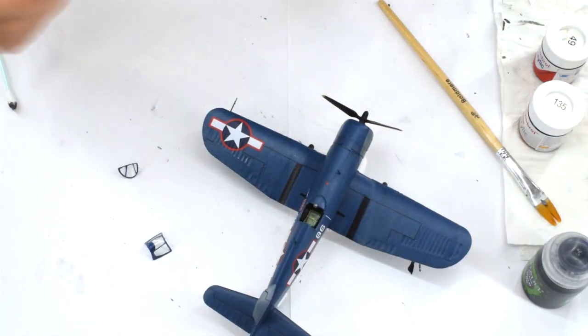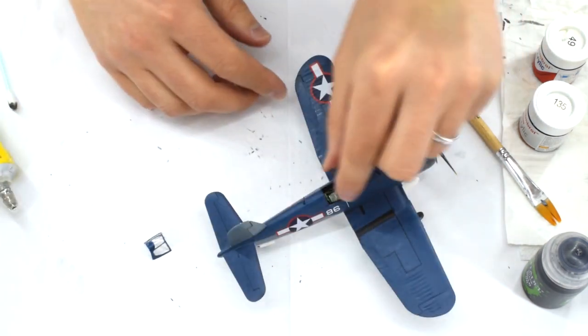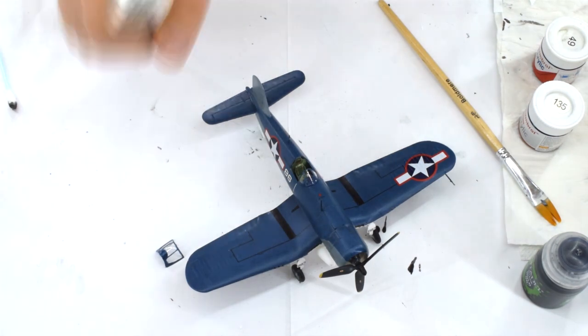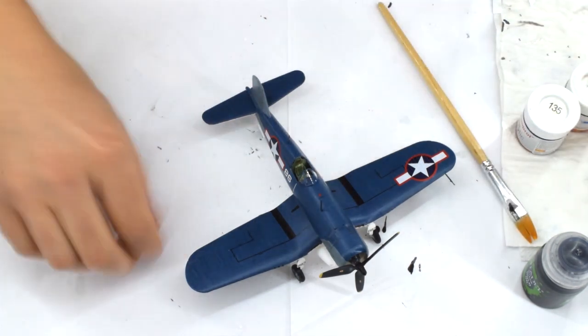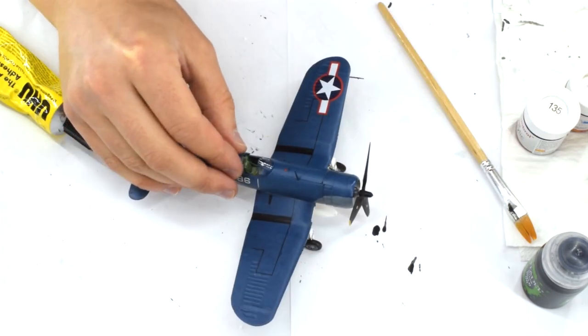A general purpose glue was used to cement the cockpit canopy in place. Poly cement has a habit of fogging up clear parts and this glue does not. It does leave strings though, so you must be careful when applying it. I positioned the canopy open so that the cockpit details could be viewed.